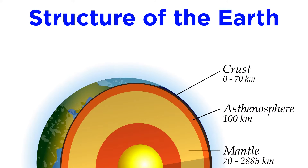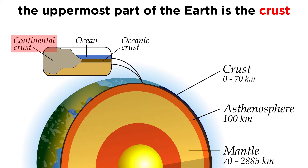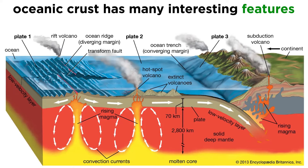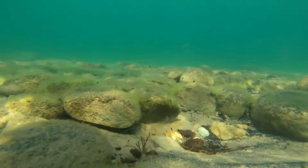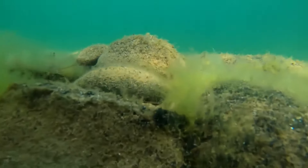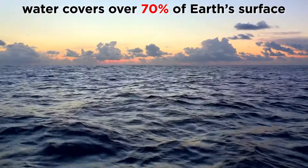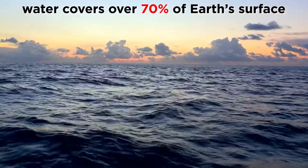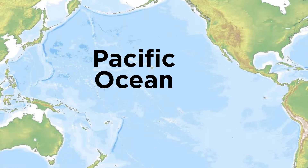At this point in the series we understand the structure of the earth, which includes the crust below our feet, but also oceanic crust at the bottom of the ocean. We mentioned a few of the features of oceanic crust when we introduced plate tectonics — those being mid-ocean ridges and trenches. But to fully understand the structure of oceanic crust, it will be useful to learn more about the layers of the ocean itself. Water covers over 70% of the earth's surface, so this will indeed be a critical section to include. Let's take a deep dive into the Pacific Ocean.